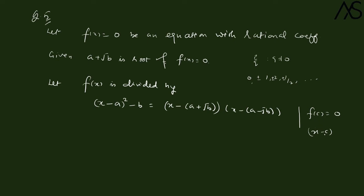By the factor theorem: if f(c) = 0, then x - c is a factor of f(x), meaning this x - c exactly divides f(x) with remainder 0. So we divide f(x) by (x-a)² - b, which is a quadratic polynomial (degree 2), and the remainder will be of degree one less — that is, of the form rx + s.